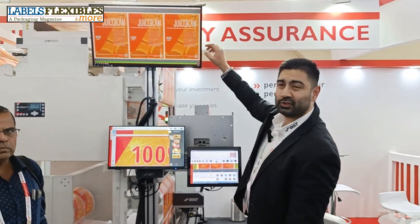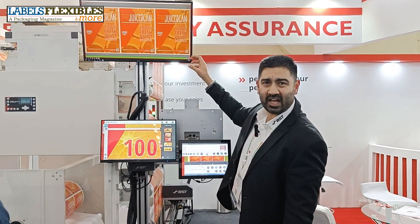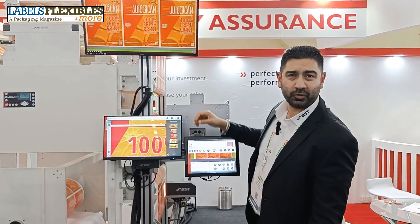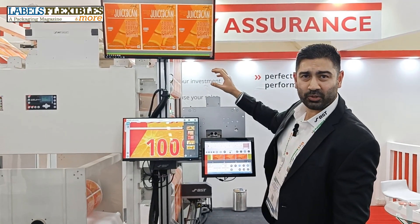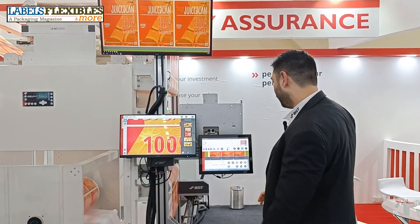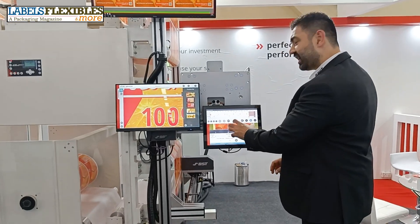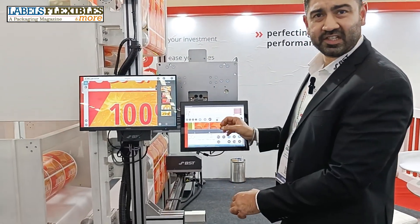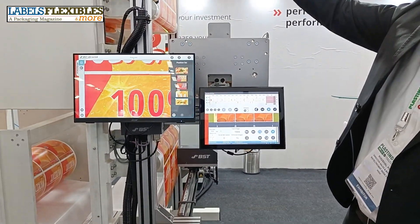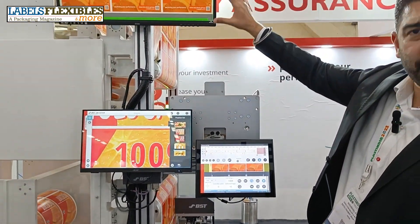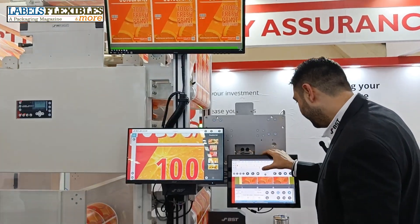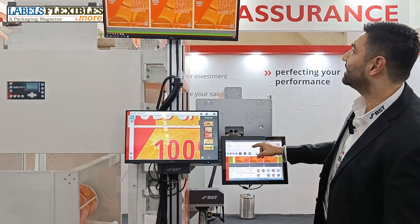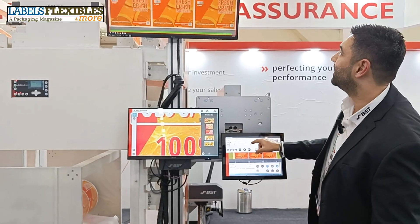Here you can see the superb image clarity and image resolution that the TubeScan is famous and known for. The entire repeat is available to the operator at any given time, and whichever defect is detected will be shown on the 43-inch viewing monitor. For example, in lane 3, this is the defect which has been detected.